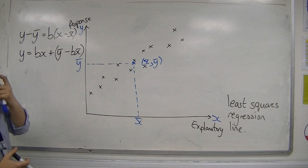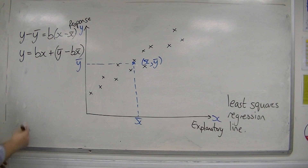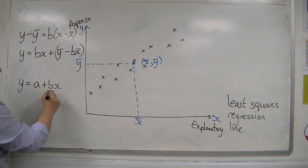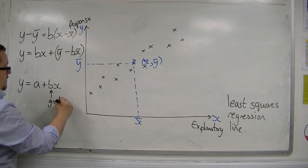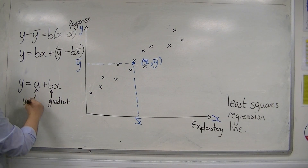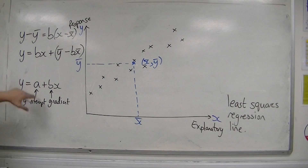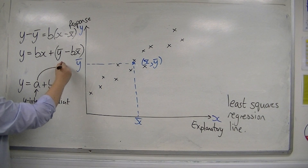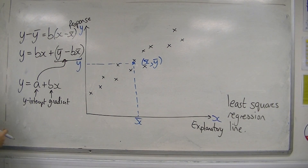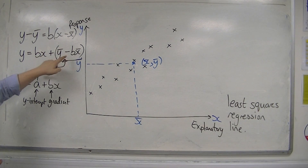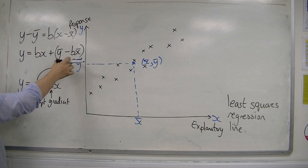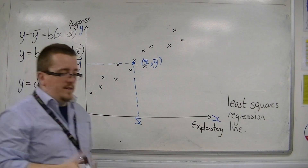If I'm looking at this in the form of y equals a plus bx, where b is the gradient of the line and a is the y-intercept, then the y-intercept is y-bar minus bx-bar. That's this value here. So as long as I know the mean of the x's and the mean of the y's, I can calculate the value of the y-intercept — but I need b, this gradient b.